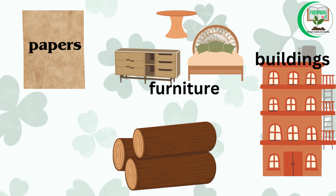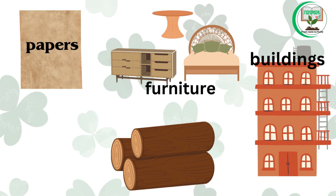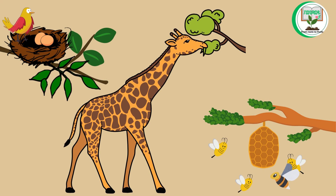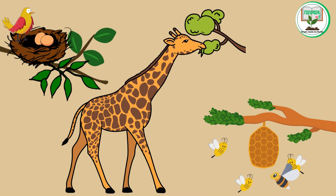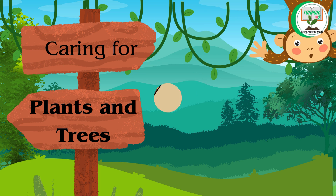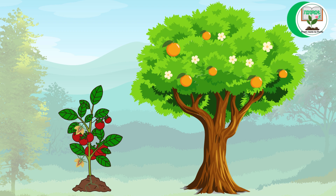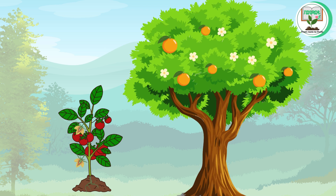Uses of trees: trees have many important uses. They provide shade, produce fruits and nuts for us to eat, and are used to make wood products such as paper, furniture, and buildings. Trees also provide homes for birds, insects, and other wildlife.